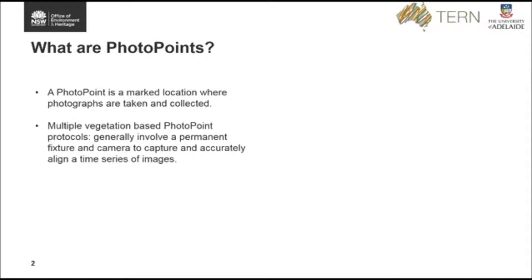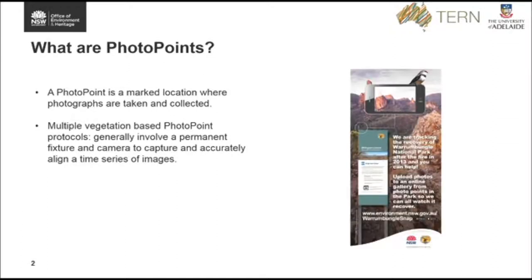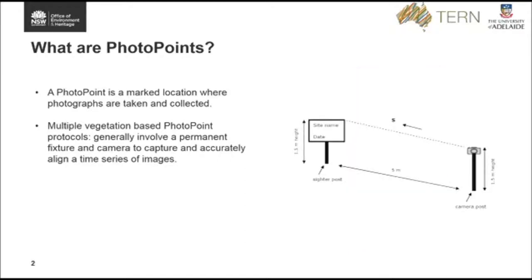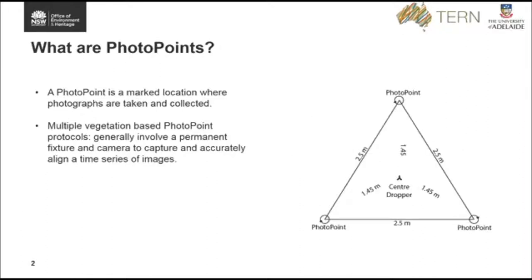There are presently a handful of vegetation photo point protocols available. Some are on a fixed sign, like the Warrabungal Snap, which you can see on the left hand or just above me. Others have photo points set up at either end of a transect where the images are taken each — this is generally through a vegetation assessment and is what OEH is presently using. What we were interested in is the AusPlots panoramic photo point protocol, which has three photo points in a triangle formation around a centre dropper. When the images are stitched together, it starts opening the opportunity for quantitative information to be extracted.